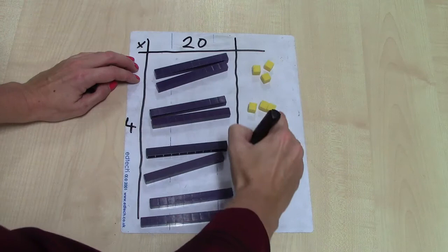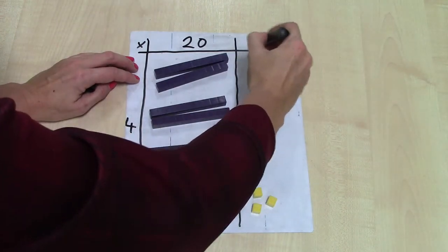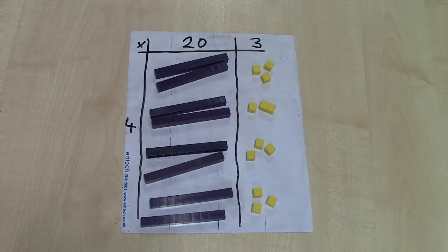And here, I've got my 3. So I started with 23 and multiplied it by 4.